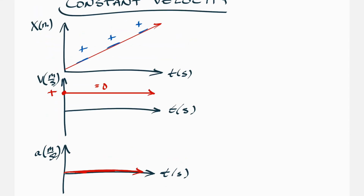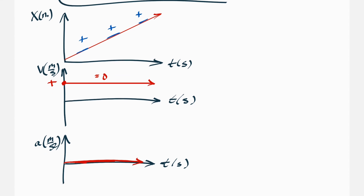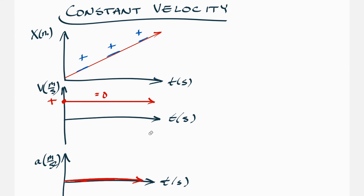That is what constant velocity motion looks like graphically, and you should commit this to memory. The only exception is when constant velocity happens to be zero meters per second — then the x versus t graph will be a flat line. For a negative v versus t, you get a negative diagonal line, mirroring the positive case.